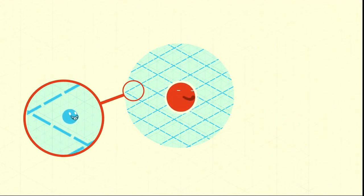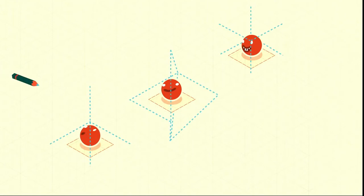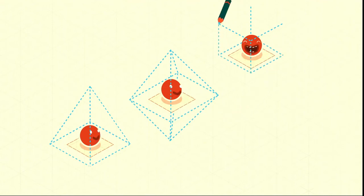But we can say there's a certain probability of finding an electron in a given space around the nucleus. And that means that we can ask the following question. If we drew a shape around the nucleus such that we would be 95% sure of finding a given electron within that shape, what would it look like?